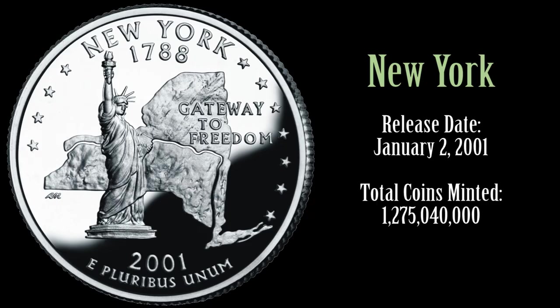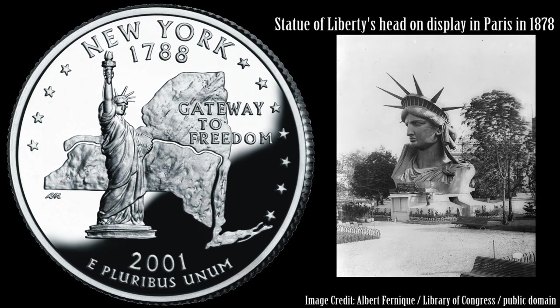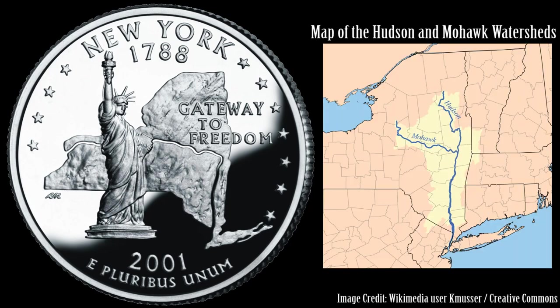New York's Quarter features one of America's most iconic symbols, the Statue of Liberty, in front of a map of the state. The 11 stars are a reference to New York being the 11th state to ratify the Constitution. The caption Gateway to Freedom recalls New York City's history as an arrival point for millions of immigrants, especially at Ellis Island in the late 19th and early 20th centuries. The Statue of Liberty was dedicated in 1886 and was a gift from the people of France. The statue was often one of the first sights that European immigrants saw upon their arrival by ship across the Atlantic. The map of New York featured on the quarter displays the Hudson River, a key waterway throughout the state's history, and the Erie Canal, built in the early 19th century.